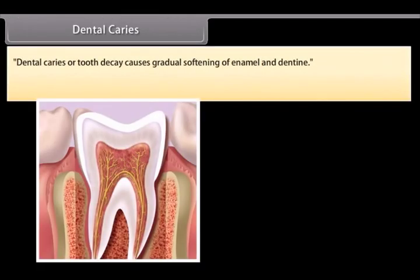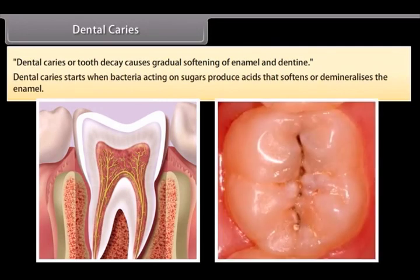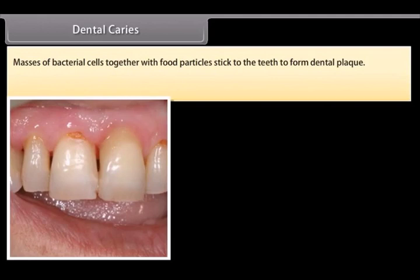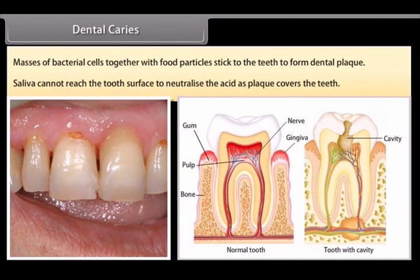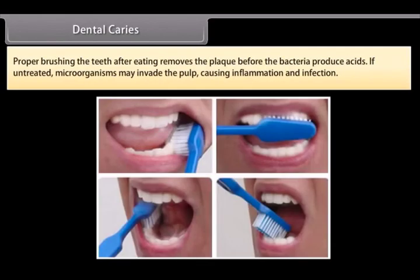Dental caries, or tooth decay, causes gradual softening of enamel and dentine. It starts when bacteria acting on sugars produce acids that soften and demineralize the enamel. Masses of bacterial cells together with food particles stick to the teeth to form dental plaque. Saliva cannot reach the tooth surface to neutralize the acid as plaque covers the teeth. Proper brushing after eating removes the plaque before bacteria produce acids. If untreated, microorganisms may invade the pulp causing inflammation and infection.